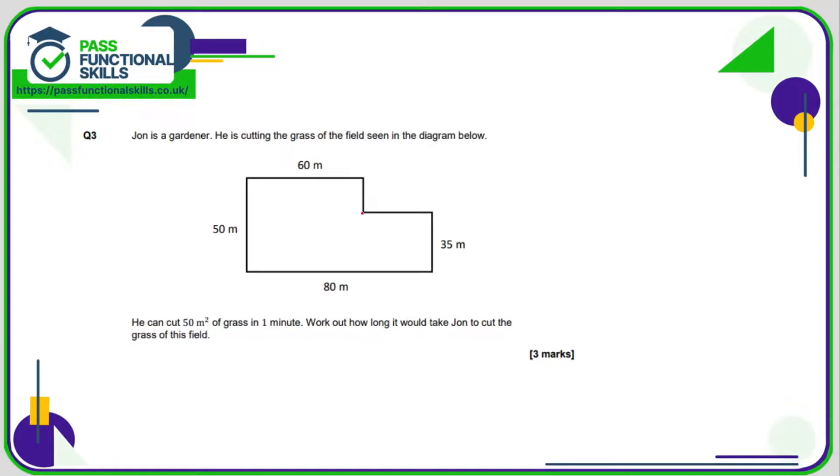Now this is a compound shape, so I'm going to turn it into two shapes that are easy to calculate the area for. Here we've got a 60 by 50 rectangle. 60 times 50 is 3000 square meters. And here we've got 35 by—well, what is this distance here? Well, if it's 80 from here to here and 60 from here to here, then it must be 20 from here to here, since 80 minus 60 is 20. So 20 times by 35 is 700.